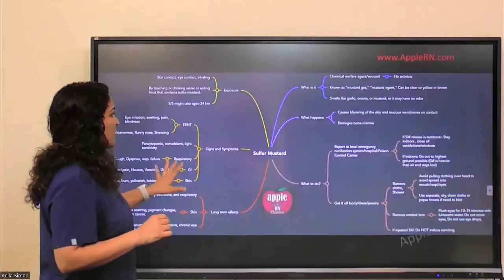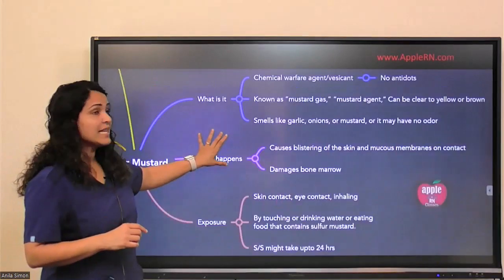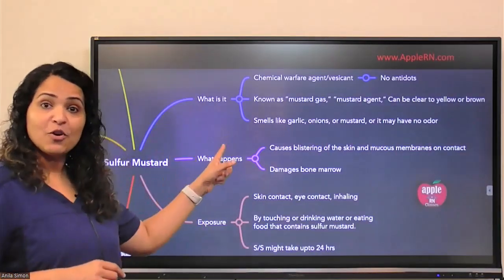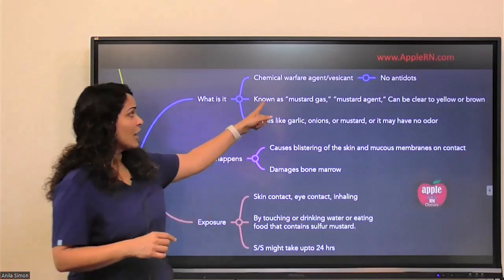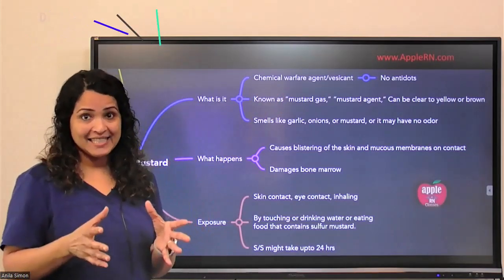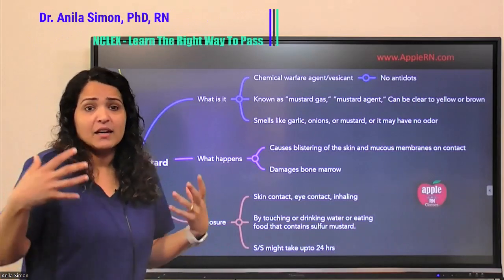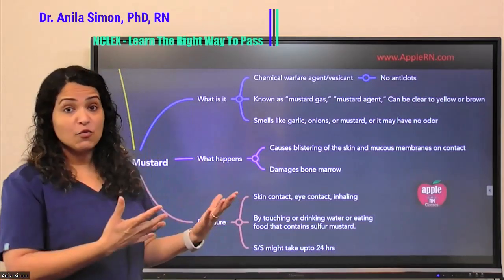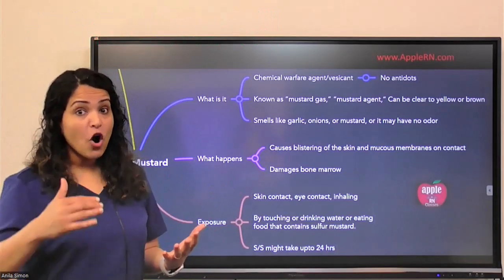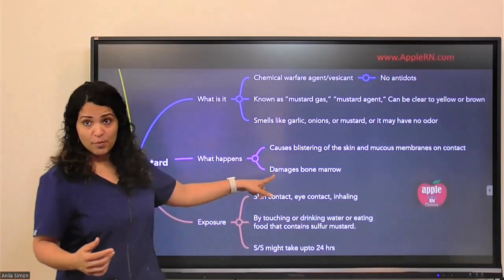This is the concept map, and we are going to go through each and everything about Sulphur Mustard. First of all, what is it? It's a chemical warfare agent and it comes under the group of Vesicants. Vesicants are the ones which actually cause a lot of blistering. This is a very powerful chemical — it can alter DNA and it can damage bone marrow too.